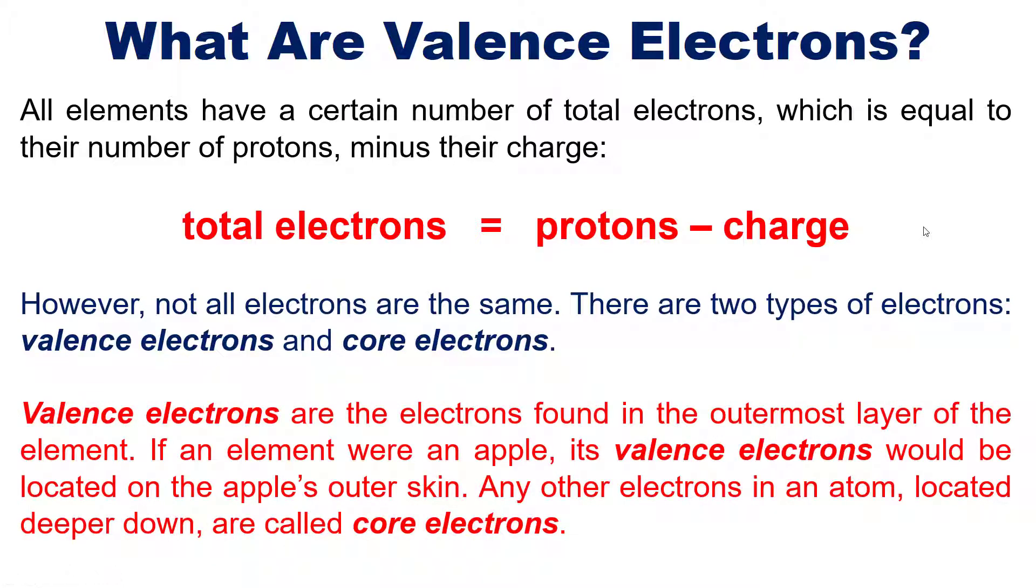Valence electrons are the electrons found in the outermost layer of the element or the atom. So if an element were an apple, its valence electrons would be located on the apple's outer skin. All of the other electrons in the atom, located deeper down, are called core electrons. Now, as we'll discuss later on, when elements react with each other, it's almost always the valence electrons, the ones on the outer skin that are exchanging or being shared, not the core electrons.